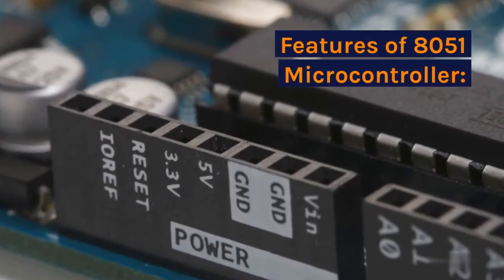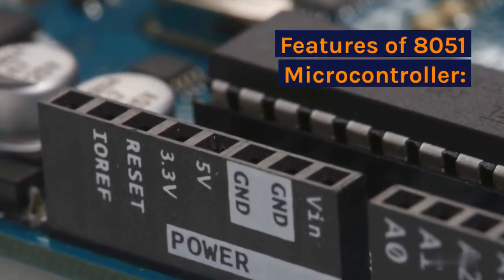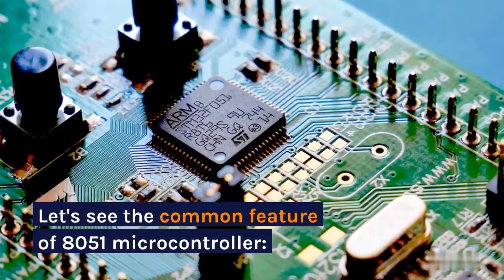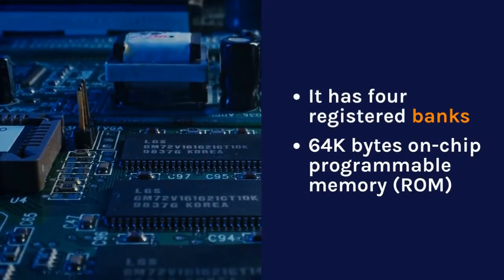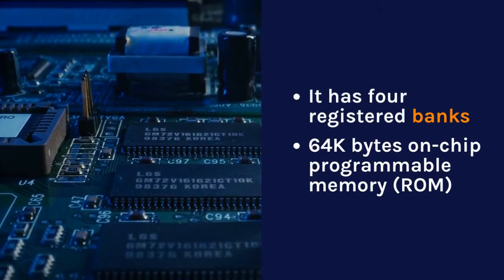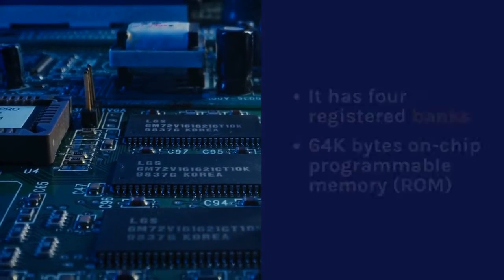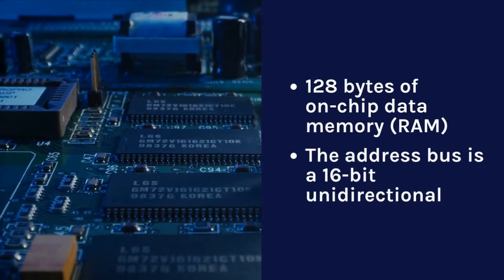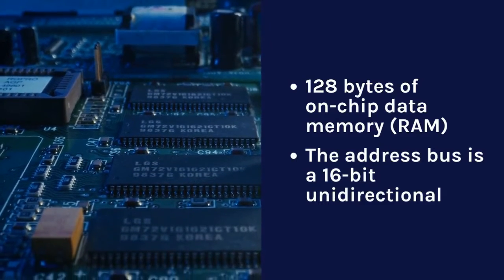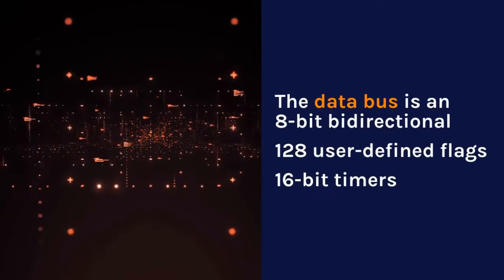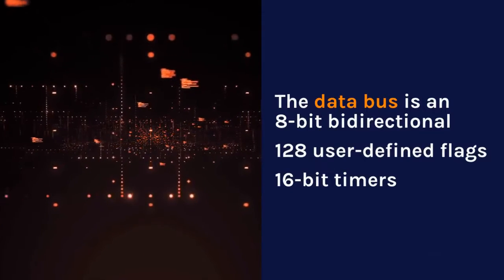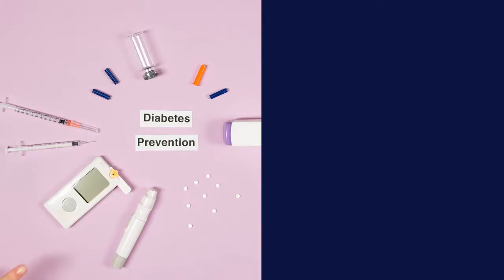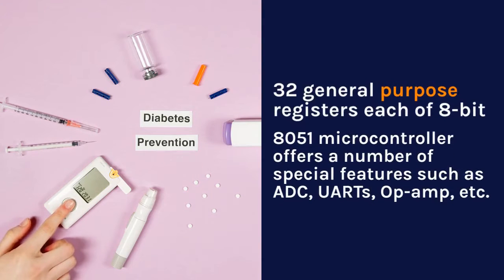Features of 8051 Microcontroller. Let's see the common features of the 8051 Microcontroller. It has four register banks, 64K bytes of on-chip programmable ROM memory, 128 bytes of on-chip data RAM memory, a 16-bit unidirectional address bus, an 8-bit bi-directional data bus, 128 user-defined flags, 16-bit timers, and 32 general-purpose registers each of 8-bit.